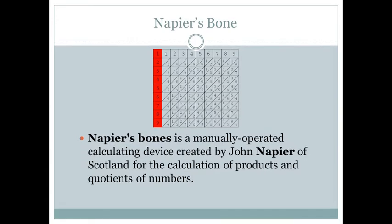The next is Napier's Bone. Napier's Bone was developed by John Napier. It was a manually operated calculating device that could find products and quotients of numbers.